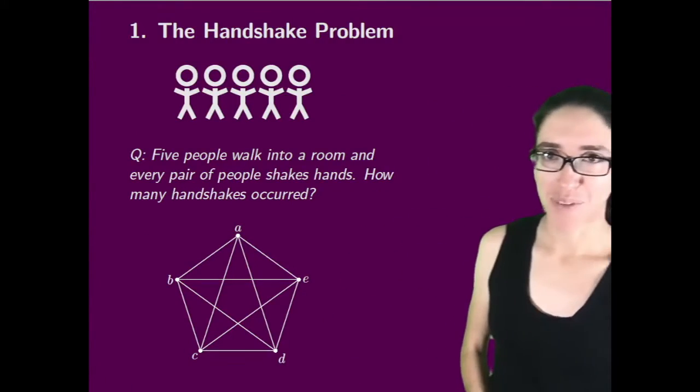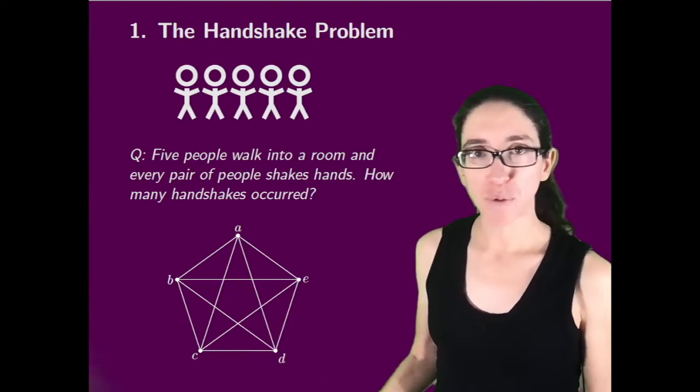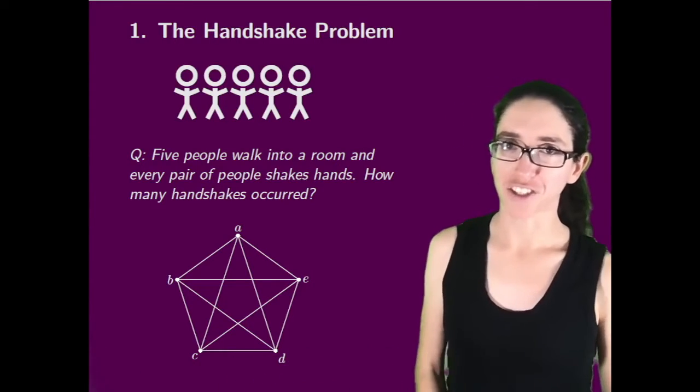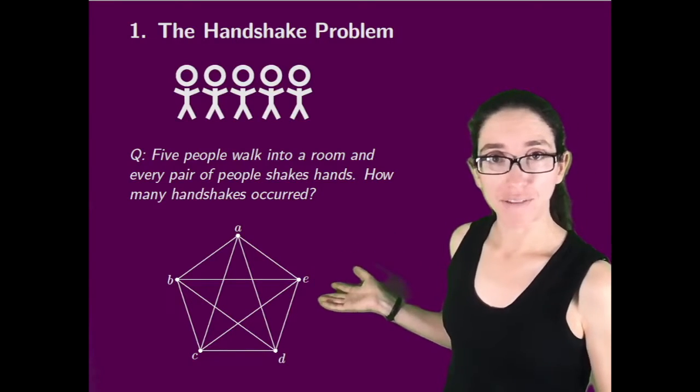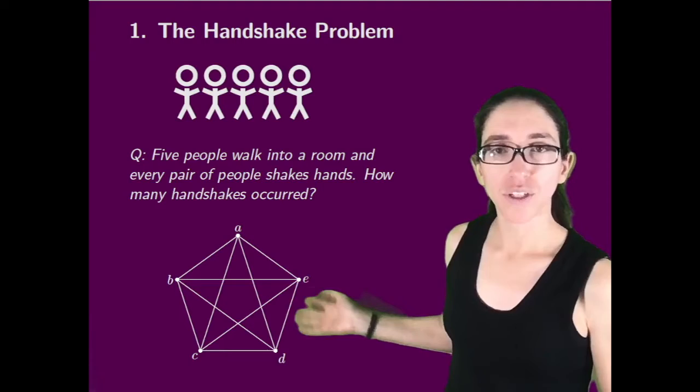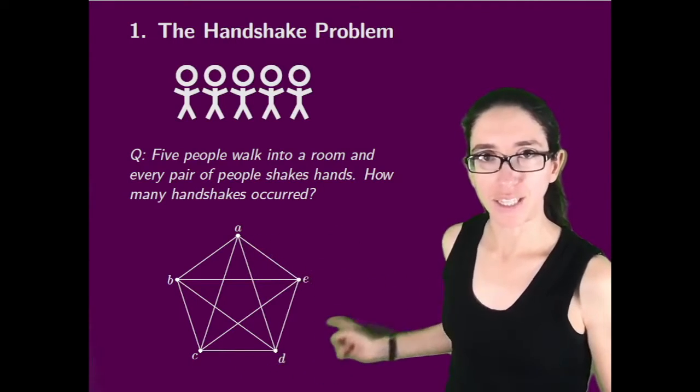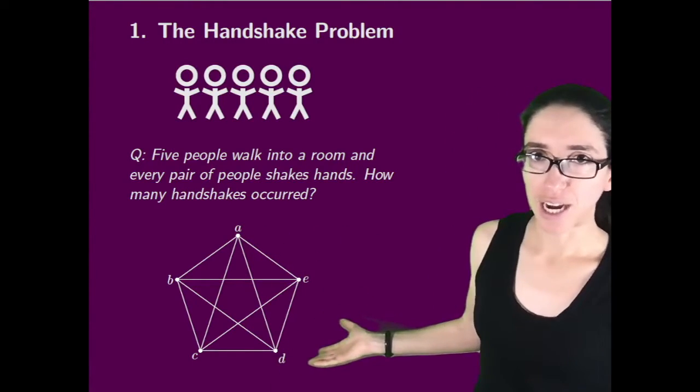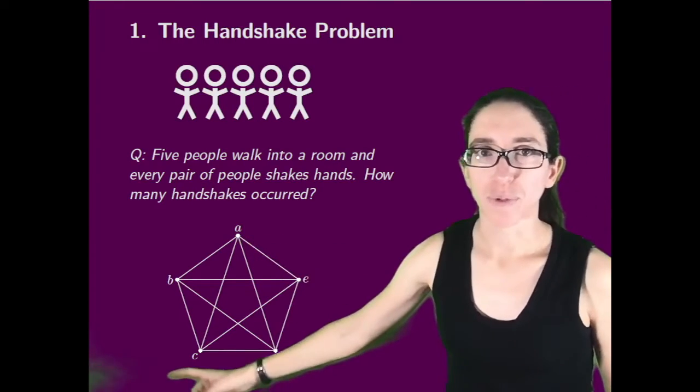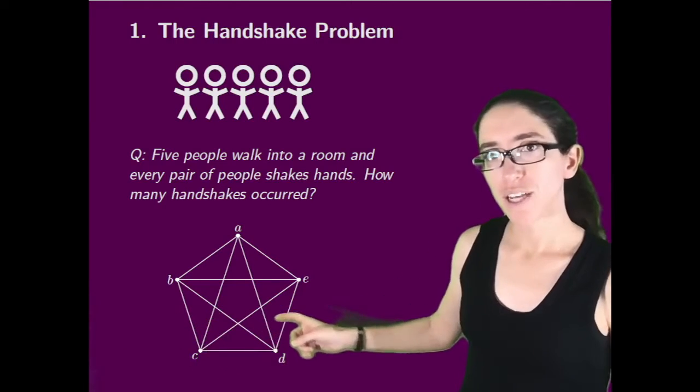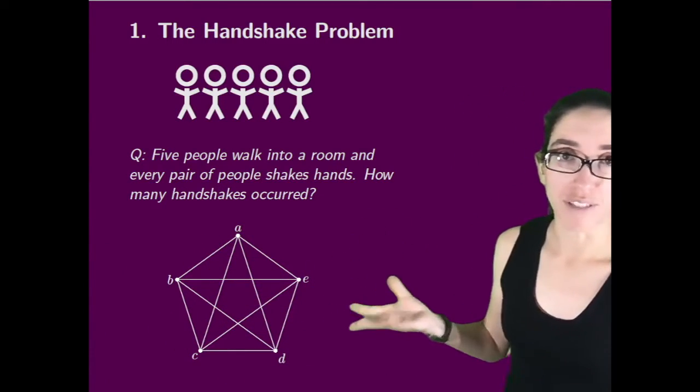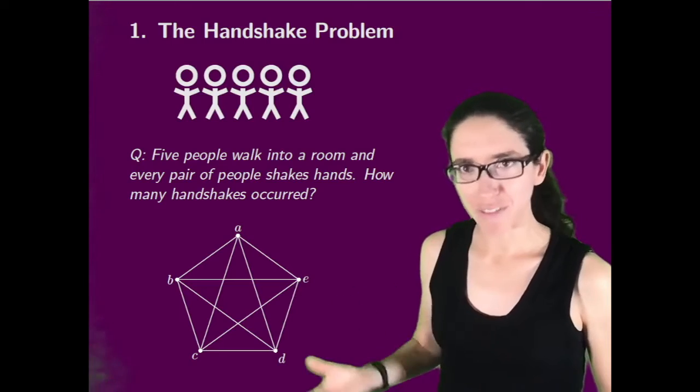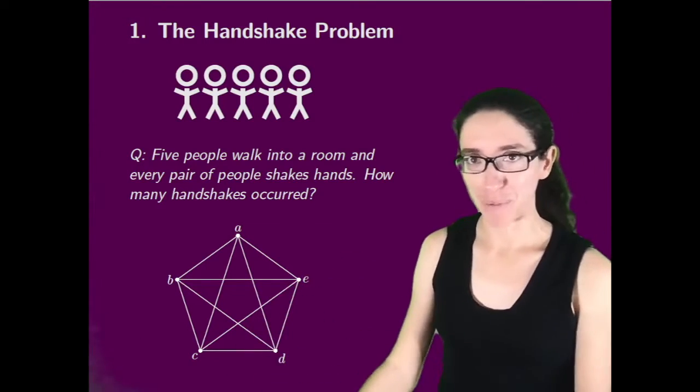The first is called the handshake problem. Say five people walk into a room, nobody knows each other, and they all shake hands with each other. How many handshakes occurred? One nice way of modeling this is with a graph, where you have nodes and edges between the nodes. The nodes A, B, C, D, E represent the five people, and the edges between them represent the handshakes. Around the outer border of the pentagon we have five edges, and the star in the middle also has five edges. So five plus five is ten handshakes. But what about six people, or seven people, or a hundred people?